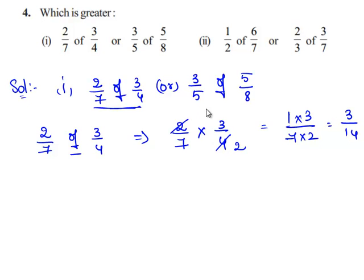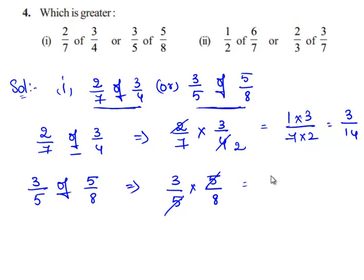Now we shall consider 3 by 5 of 5 by 8. Since we know we can replace the word of with a multiplication sign, this can be written as 3 by 5 multiplied by 5 by 8. Since in both the numerator and denominator we have the same factor, this can be written as 3 times 1 by 1 times 8 which is equal to 3 by 8.